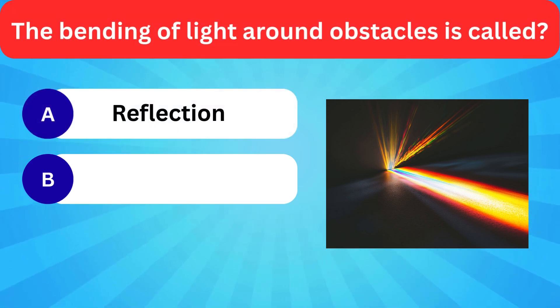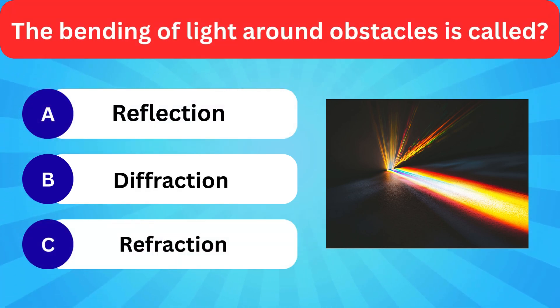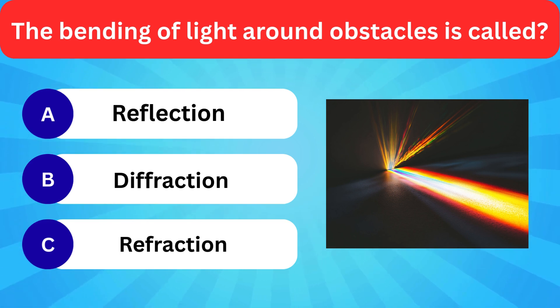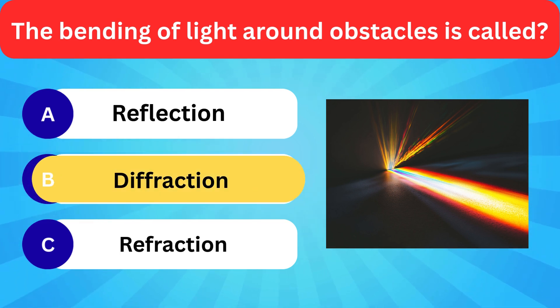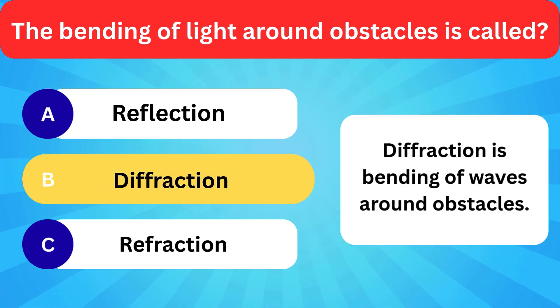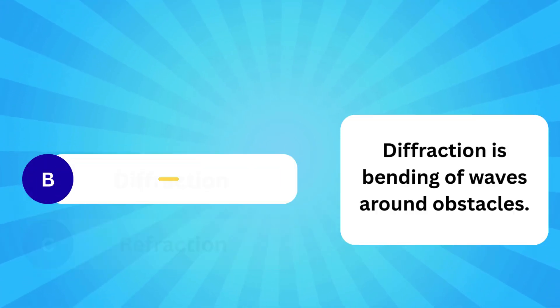The bending of light around obstacles is called — options: Reflection, Refraction, Diffraction. Correct answer is diffraction. Diffraction is the bending of waves around obstacles.